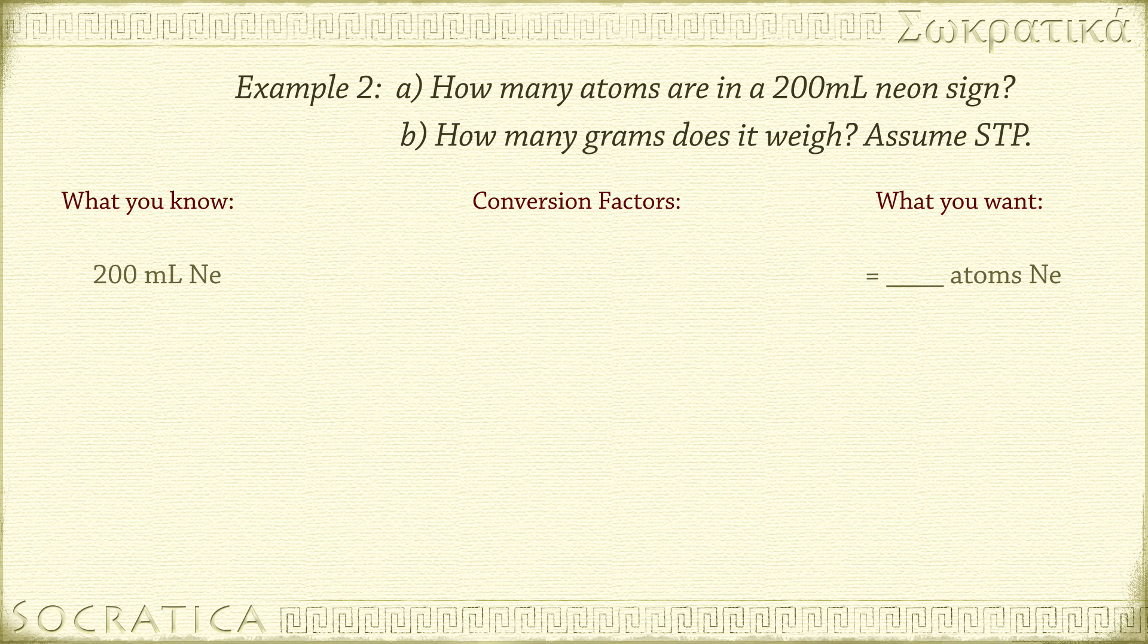We'll need several conversion factors for this problem. First, we know we need to go from milliliters to liters, so we'll use the conversion factor 1,000 milliliters per 1 liter. Make sure the orientation of your conversion factor is correct, so units cancel. Next, we'll use the strange but true fact that gases are 22.4 liters per mole of gas at STP. Then, we'll use Avogadro's number to get the number of representative particles. Neon is atomic, not molecular, so in this case the representative particles are atoms.